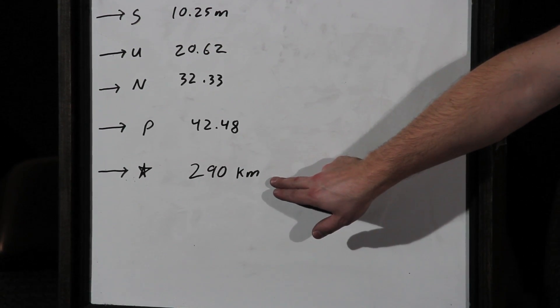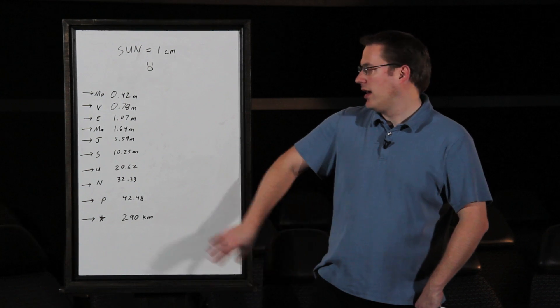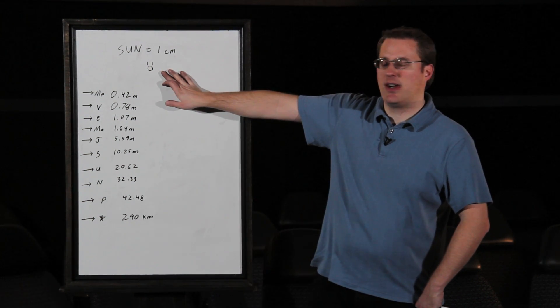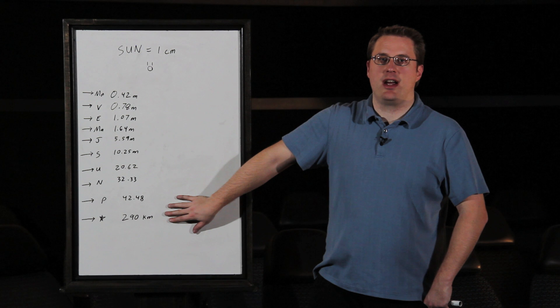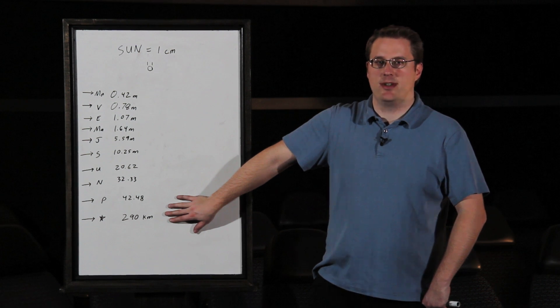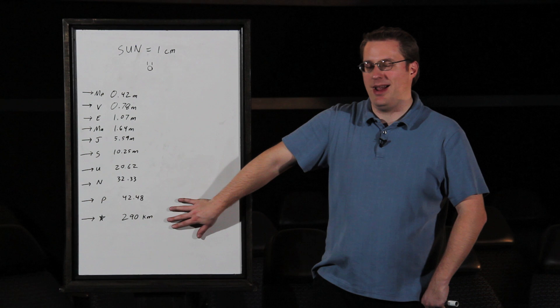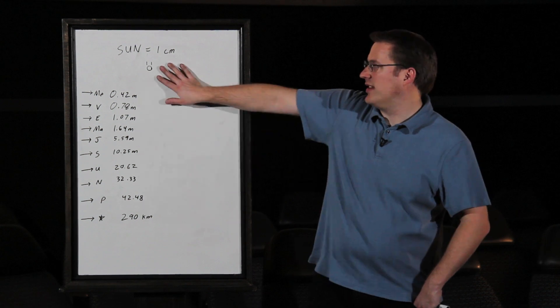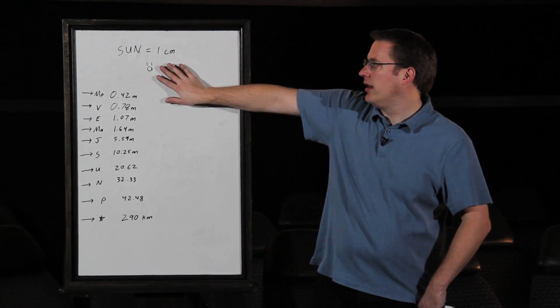Just for reference, I put the closest star on here too. Proxima Centauri is your closest star, and again, your sun's a centimeter, very, very small. Proxima Centauri would be almost 300 kilometers away. This would be enormously far away even though your sun's just a little small object.